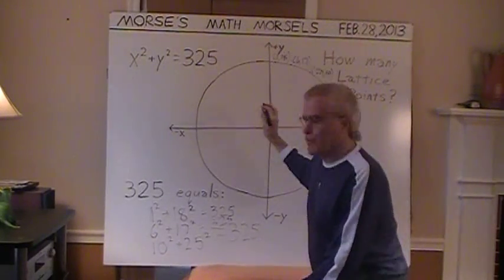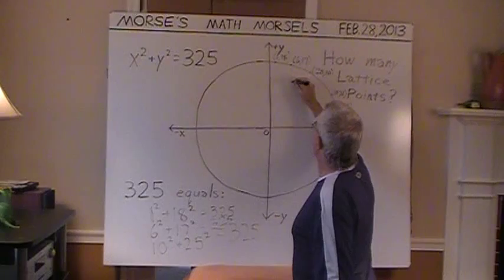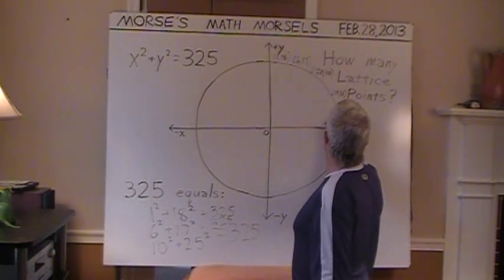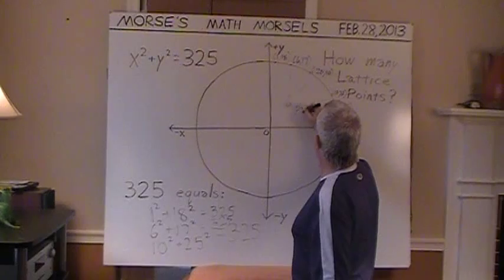Those are all the first quadrant lattice points. And there are 1, 2, 3, 4, 5, 6 of them. I'm just going to call this 6 points.